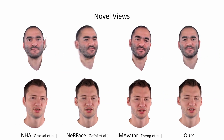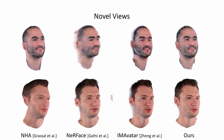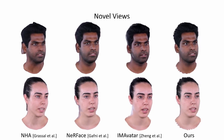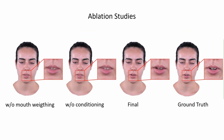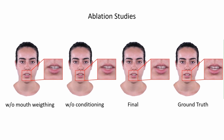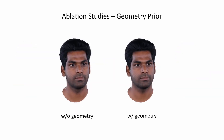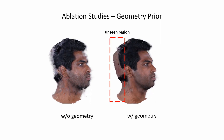Here we present novel view synthesis with out-of-distribution camera poses. Most state-of-the-art methods struggle to render consistent images under novel views, producing either blurred images or suffering from artifacts caused by overfitting. Our method uses face-parsing maps to improve the rendering of the mouth interior by increasing the weight and adding additional expression conditioning to the MLP. Using the geometric prior of the FLAME model, we improve the extrapolation to novel views.